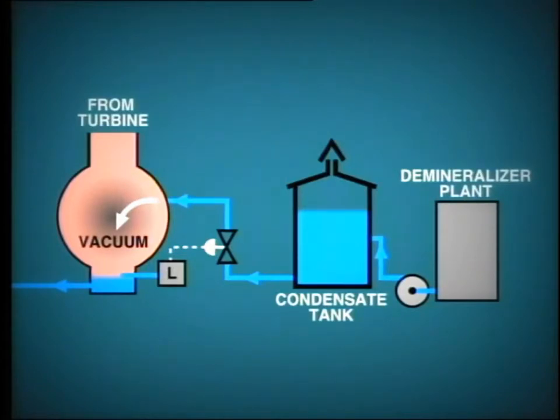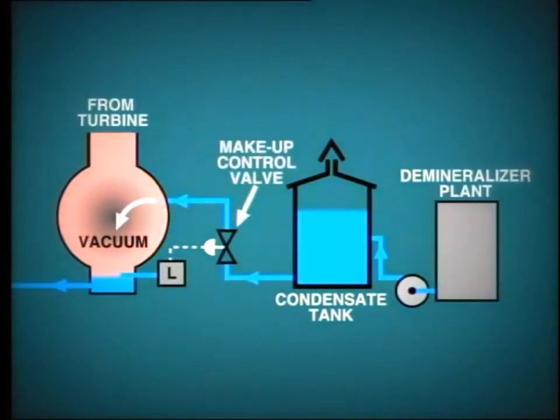During operation, the vacuum in the condenser steam space causes water to flow from the condensate tank due to the difference in head. But how does the system know when and how much makeup to add? How is the level of condensate controlled in the condenser hot well?